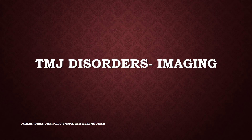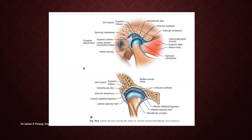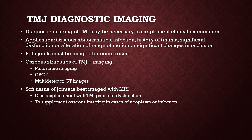Let's start with TMJ disorders imaging. To summarize the anatomy of the temporomandibular joint: the joint comprises the head of the condyle, the articular surface and the eminence, and there is an interarticular disc which is a fibrocartilaginous structure. For performing diagnostic imaging of the TMJ, it may be necessary to supplement it with clinical examination. Thorough clinical examination and arriving at a diagnosis is of utmost importance before diagnostic procedures are advised.